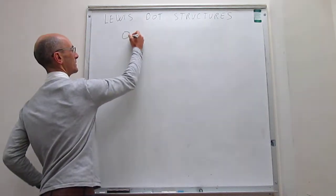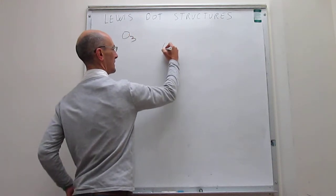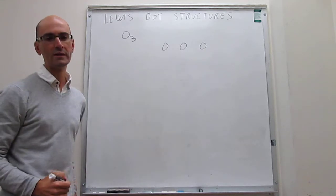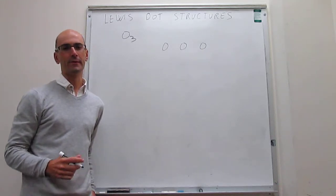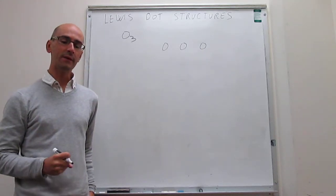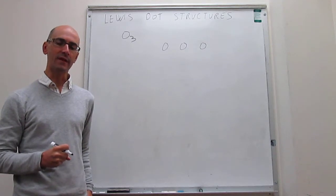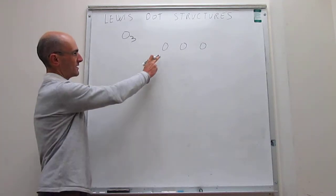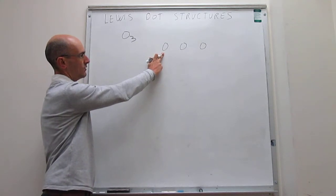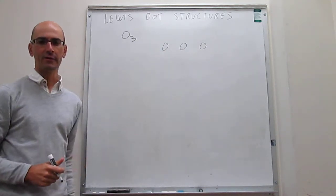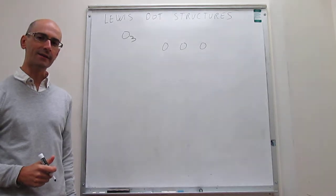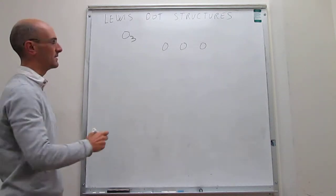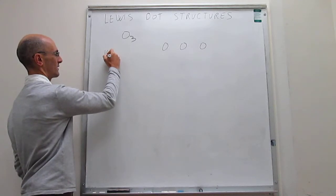Ozone has this shape with three oxygen atoms — one central and two terminal. As always, we begin by counting the number of valence electrons available. Oxygen has a 2s2 2p4 electronic configuration, so that is six valence electrons per atom. That means we're going to have a total of eighteen valence electrons for this structure.